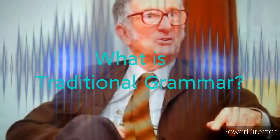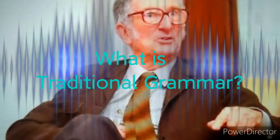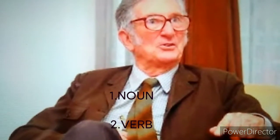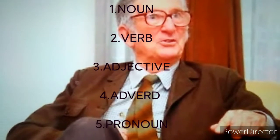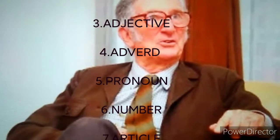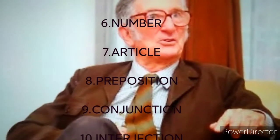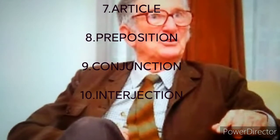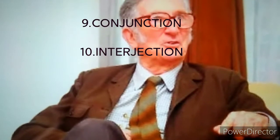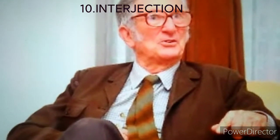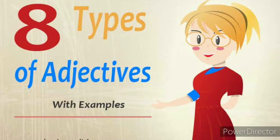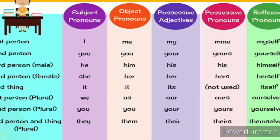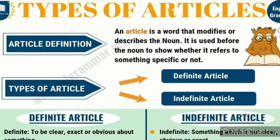In traditional grammar, there are 10 parts of speech: the noun, verb, adjective, adverb, pronoun, number, article, preposition, conjunction, and interjection. These 10 classes can be divided into some categories based on their functions.